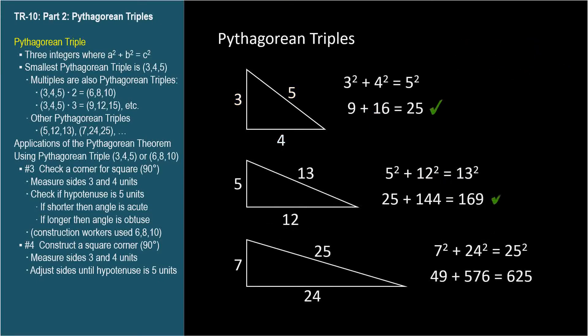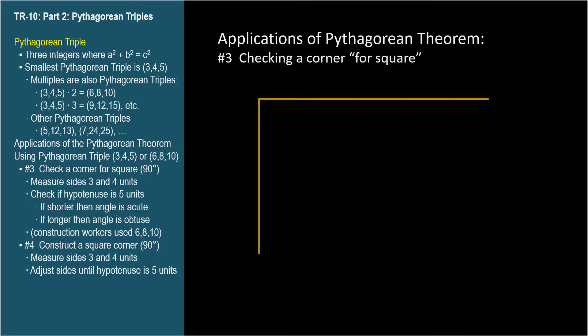Here are some more Pythagorean triples. I don't think you need to have any of these memorized, except three, four, five, and its double six, eight, ten, because triangles with these side lengths are handy for identifying or constructing right angles as the next two applications show.